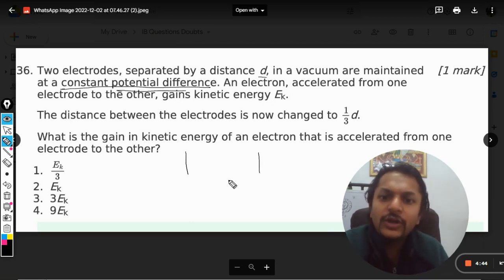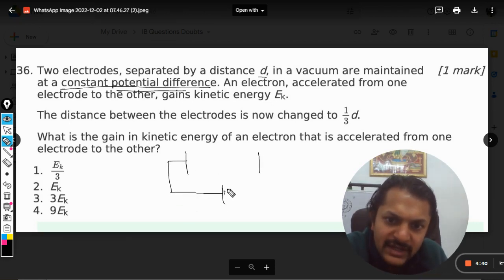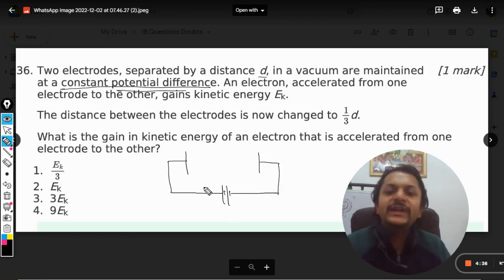plates, you can call them electrodes. They have been maintained at a constant potential difference. It means these two plates are connected with the battery, and V is the voltage, so this will become positive and this will become negative.